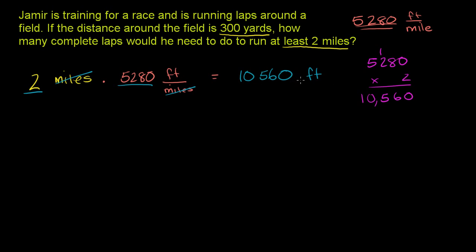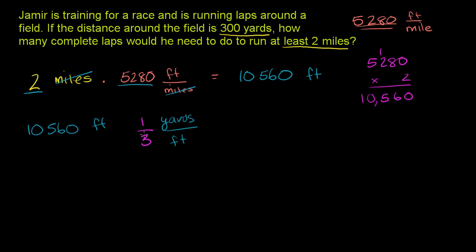So he needs to run 10,560 feet. Now we want this in terms of yards. So 10,560 feet — let's convert to yards. We want yards in the numerator and feet in the denominator so the feet cancel out. There are 3 feet for every 1 yard. And it makes sense: going from feet to yards, the number should get smaller, because yards is a bigger unit. You need fewer yards to cover the same distance.